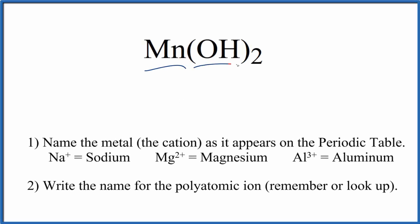To write the name for Mn(OH)₂, the first thing we need to recognize is that Mn is a transition metal. Then OH, when it's bonded to a metal like manganese, is called the hydroxide ion. It's a polyatomic ion.